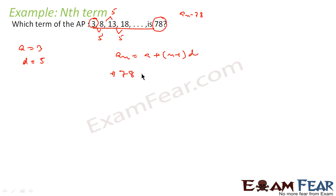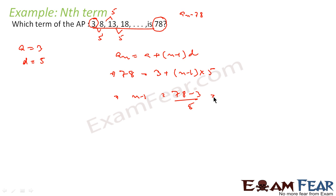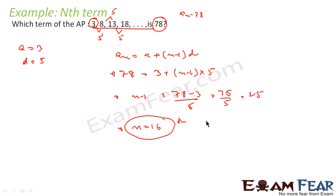An equals 78, so 78 equals 3 plus (n minus 1) into 5. Therefore n minus 1 equals (78 minus 3) by 5, that is 75 by 5, which equals 15. So n equals 16. The 16th term is 78.